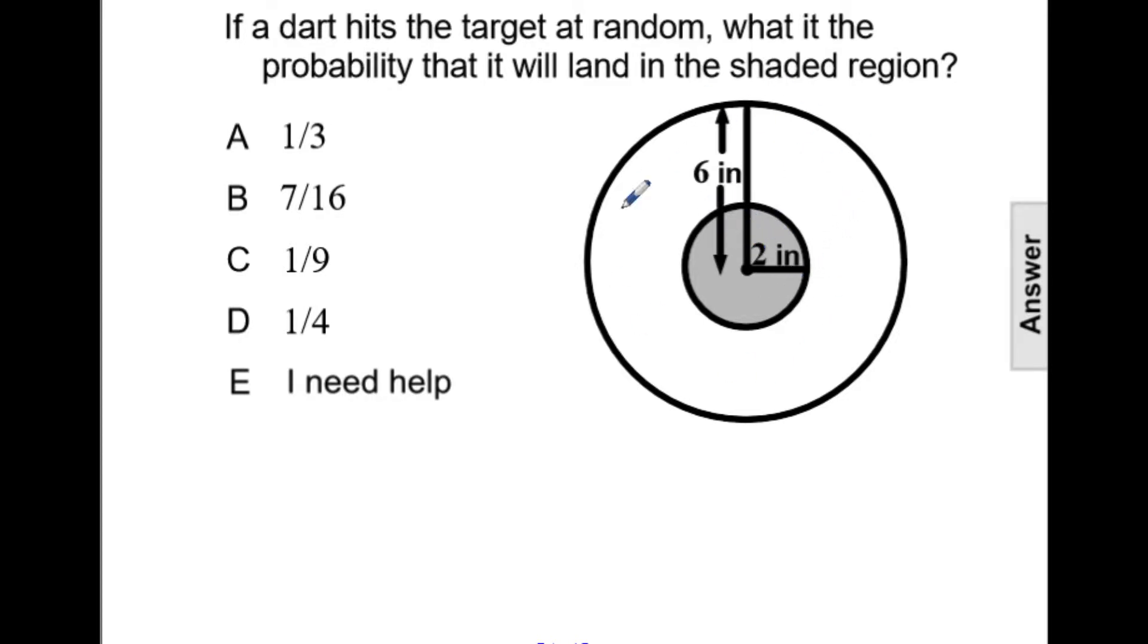So here we have two regions that are circles. We need to find the area of a circle using pi r squared.